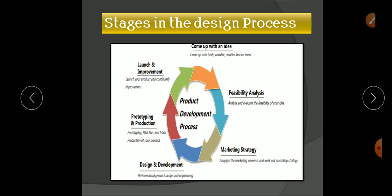After design and development, we go for prototyping and production — product prototyping, pilot run, and mass production. We then check financial feasibility by calculating the profit ratio, investment, and sales through consumer requirements. The last step is launching the product in the market. We study customer requirements, launch the product as per customer needs, and continue improvements in the design for sustainability.